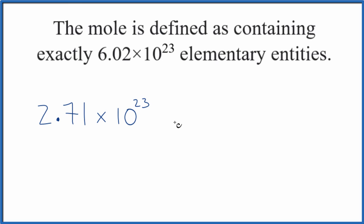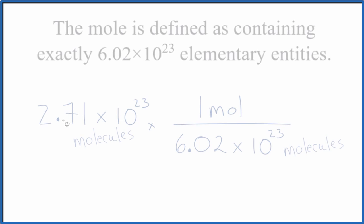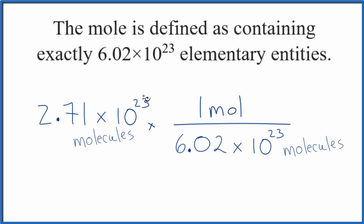So we have molecules and we know that we have Avogadro's number of particles of molecules in one mole. Since we have 2.71 times 10 to the 23rd molecules here, and then down here we have molecules, we can cancel out molecules. We're going to be left with moles. That gives us 0.45 moles of water. So we converted our molecules of water to moles.